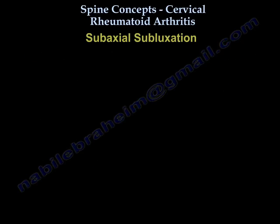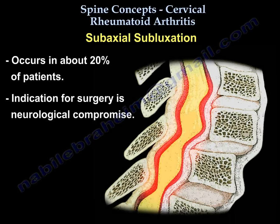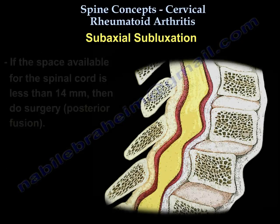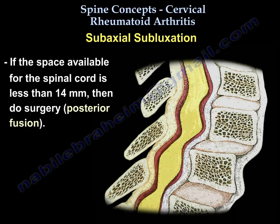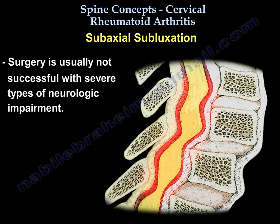The third condition is subaxial subluxation, occurring in about 20% of patients. The indication for surgery is neurological compromise. If the space available for the cord is less than 14 mm, surgery is indicated — posterior fusion is performed. Surgery is usually not successful with severe types of neurological impairment.